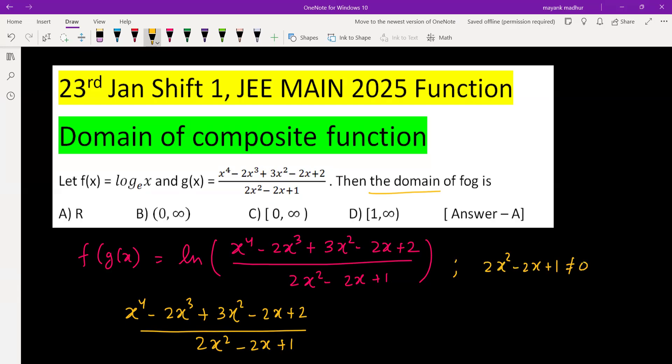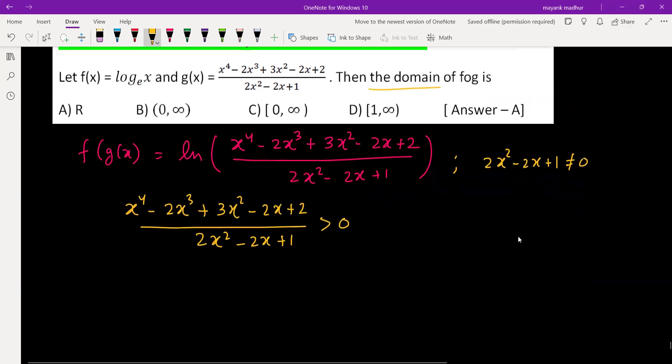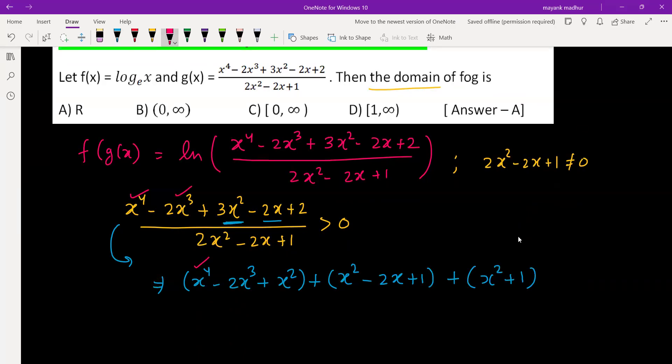Let's try to rearrange the numerator. We can write it as x⁴ - 2x³ + x². The idea behind that is we can complete the square, so we took one of the x² from here. We still have 2x², so let's use one more x² and minus 2x plus 1. So we're left with one more x² and 1.